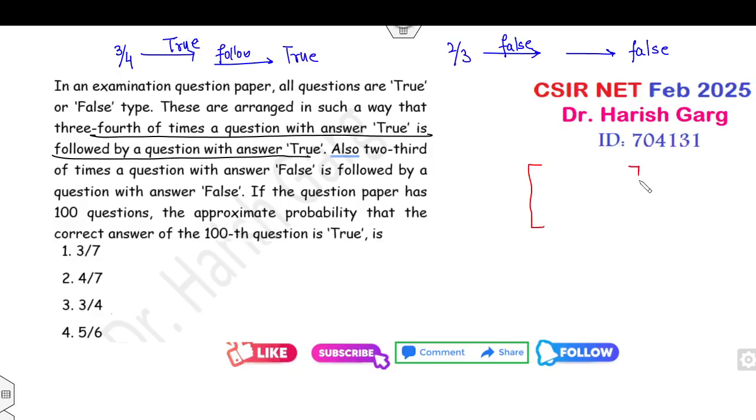Your target is to construct the transition probability matrix of 2 cross 2. The probability of true followed by true is 3/4, and 2/3 is the probability of false followed by false. Now can you complete this value? This value will be 1/4 so that the sum will be 1. This number is 1/3 so that the sum will be 1.